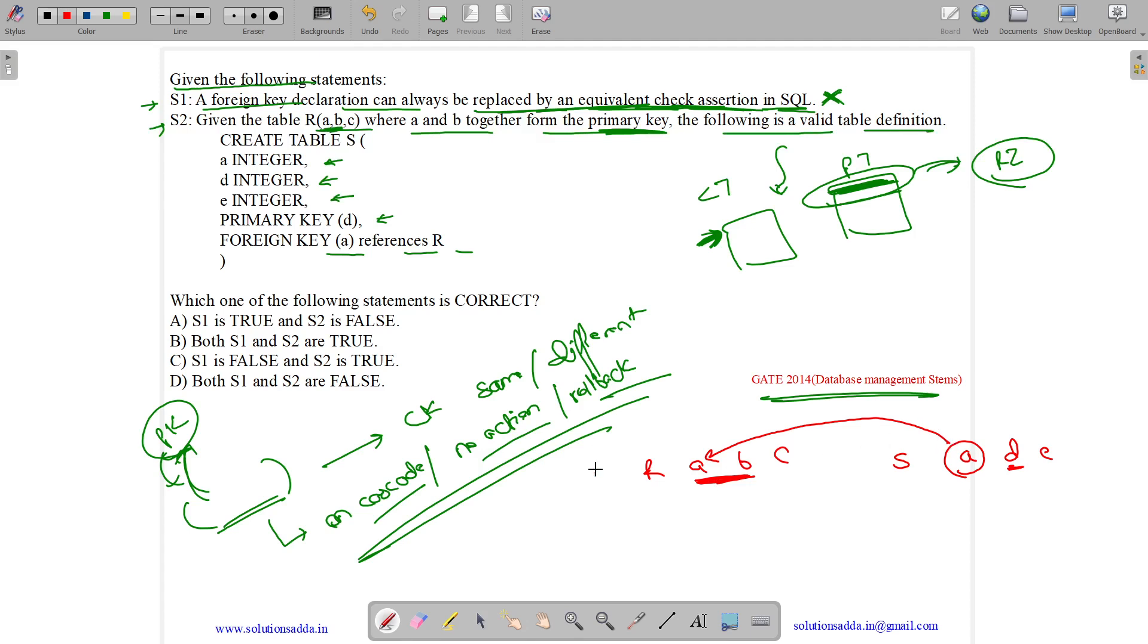So according to the definition, it should refer to the candidate key of the same or different relation. But as it is referencing R, it can refer only to the candidate key of R. So it will be false as it needs to refer to a candidate key. So both S1 and S2 are false.